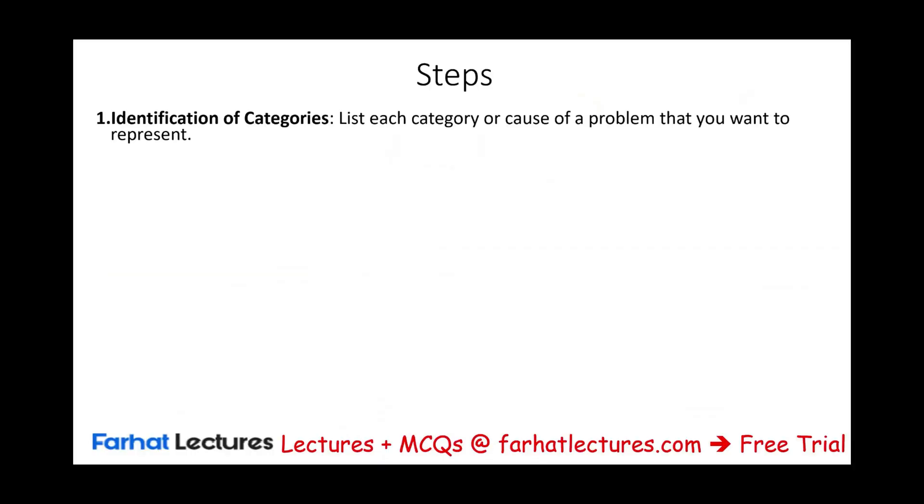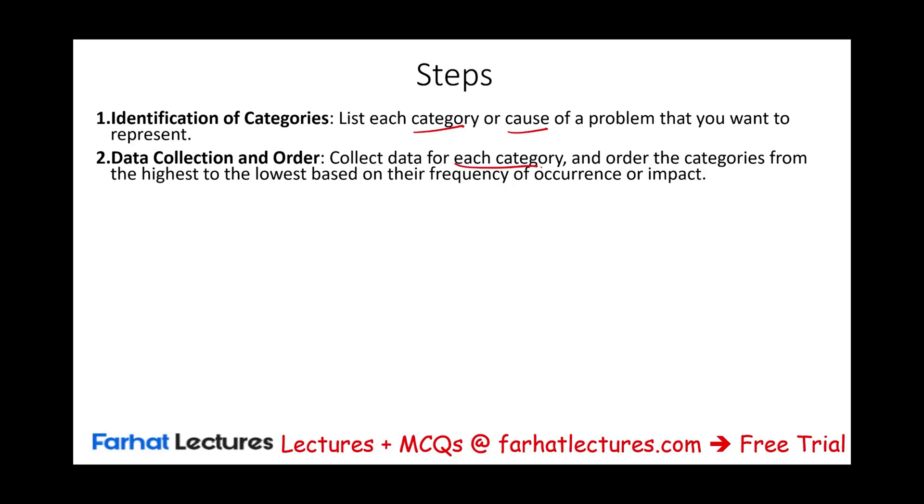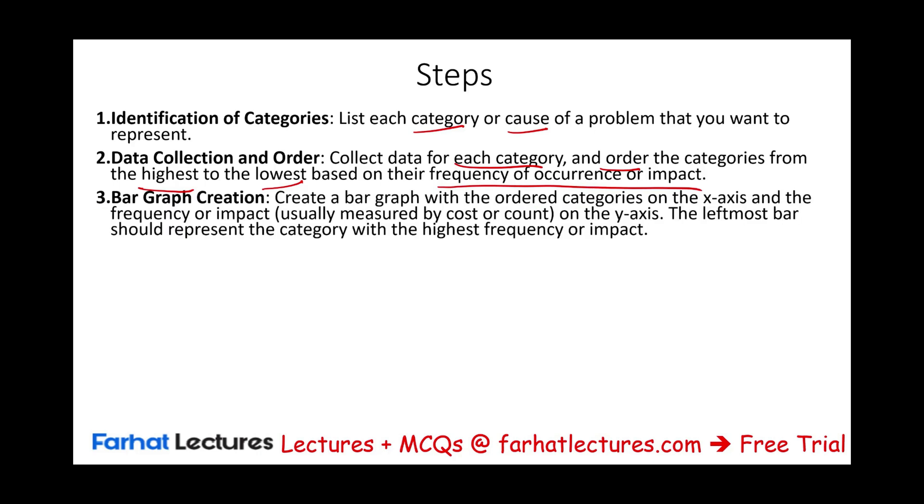Steps in building the graph. First, identify the categories. List the categories or causes of the problem you want to investigate. Then collect data for each category and order the categories from the highest to the lowest based on their frequency of occurrence through a bar graph. Create a bar graph. List the causes from the highest to the lowest. The leftmost bar should represent the category with the highest frequency or impact.